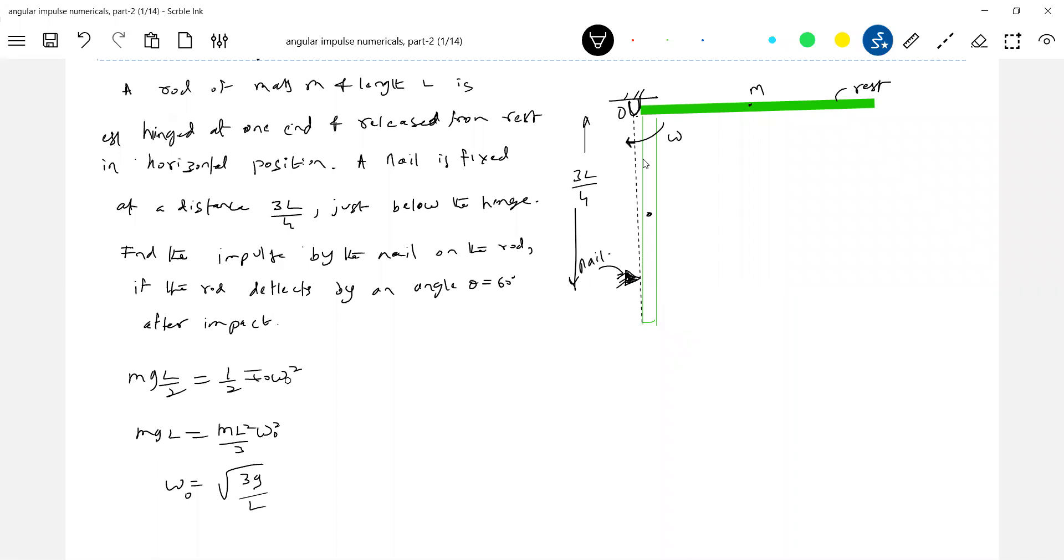The nail will exert force, it will exert impulse like this. The force will act for duration of time. This particular force will be acting on the rod. Similarly, an impulse will act on the nail. Because of this impulse, it will rebound to an angle of 60°.